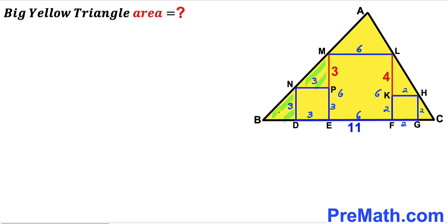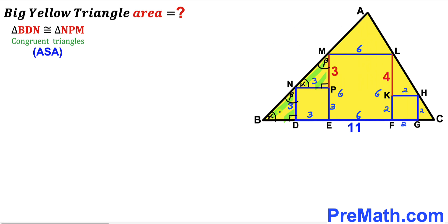Now let's focus on right triangles BDN and NPM. Since these are right angles, if this angle is alpha then the corresponding angle is also alpha, and if this angle is beta then the corresponding angle is also beta. Therefore right triangles BDN and NPM are congruent by the angle-side-angle congruency theorem. Since these two triangles are congruent, segment BD equals segment NP, so BD is 3 units.